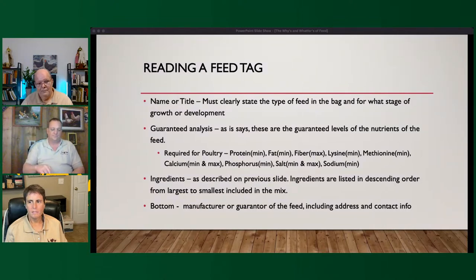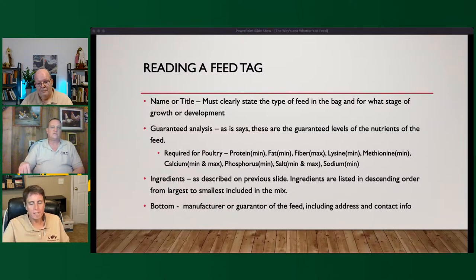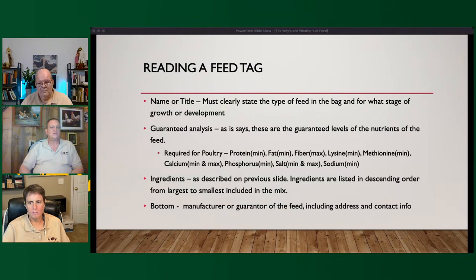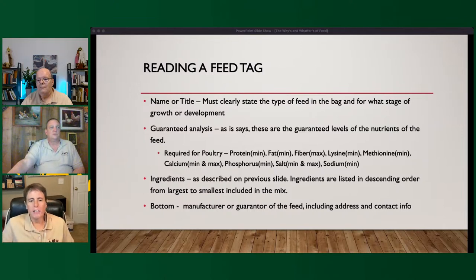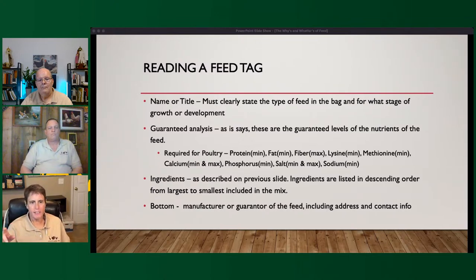At the bottom, every bag has to say who the manufacturer or guarantor is for that feed, including their mailing address — a post office box, town, etc. These are the requirements for a feed label in the U.S. Are there questions coming in? I do have one: you said the United States — I feel like there's a lot less on a Canadian feed tag. It's horrible up there — Canadian tags don't require amino acids, and they don't even have to put ingredients on there.